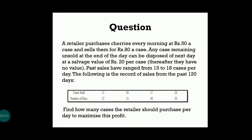The question goes like this: a retailer purchases cherries every morning at rupees 50 a case (a box) and sells them for rupees 80 a case. Any case remaining unsold at the end of the day can be disposed of the next day at a salvage value of rupees 20 per case, and thereafter they have no value. Past sales have ranged from 15 to 18 cases per day, recorded over the past 120 days. Find how many cases the retailer should purchase per day to maximize profit.